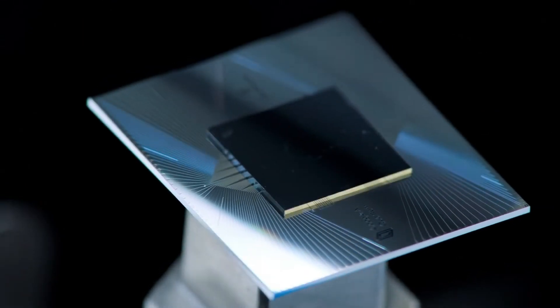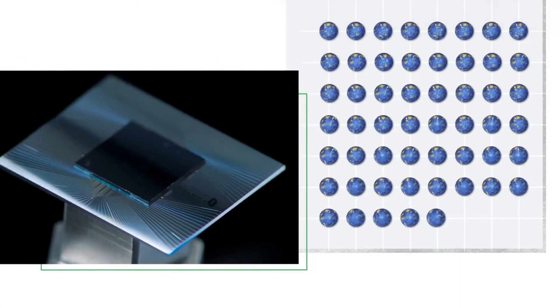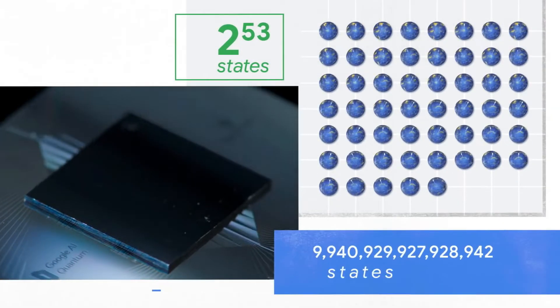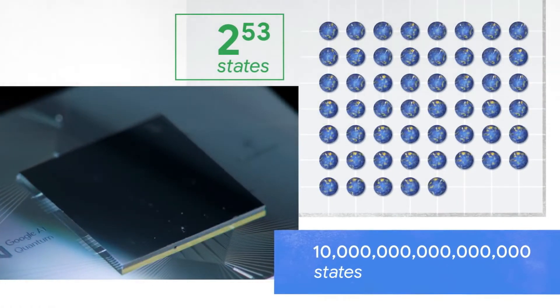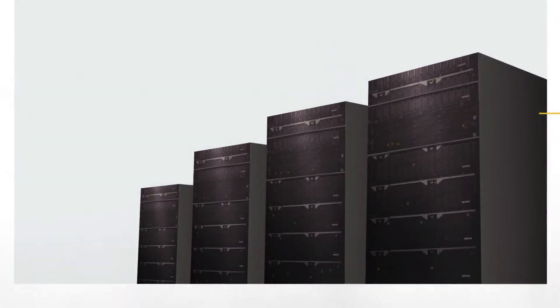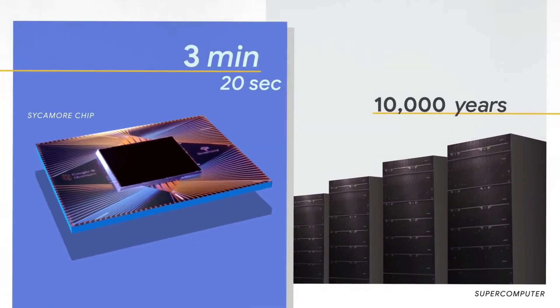The processor that achieved quantum supremacy is called the Sycamore processor. It's parallel processing two to the 53 states, which is 10 million billion, and that enormous amount of parallel processing is what gives it the power. When we run small chunks of the computation on the largest supercomputer in the world, our estimate is that it will take thousands of years to complete the full computation.